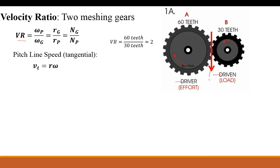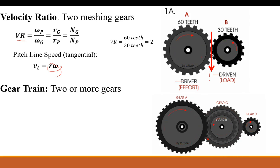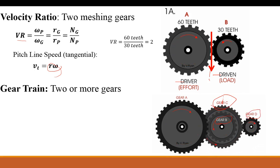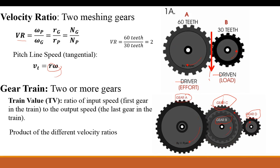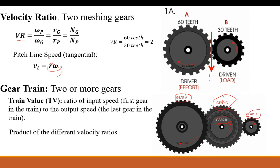In this particular gear setup, we have a velocity ratio of two — doubling the angular velocity. The tangential speed is the same but the angular velocity differs because of the two different radii, which brings us back to the pitch line relationship based on radius and angular velocity. When you have two or more gears together you end up with a gear train. Here we have a gear train with gears meshing, a compound gear between C and B, and an output gear D — so four gears, two sets in mesh, making up a gear train. The train value is the ratio of the input speed of the first gear to the output speed of the last gear in the train.